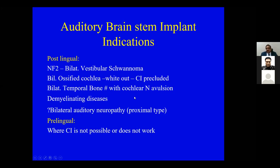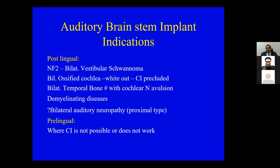What are the indications today for an auditory brainstem implant? The classical indication, even today, is NF2 — bilateral vestibular schwannoma — where we have operated on both sides. Today there is increasing effort toward removing a vestibular schwannoma while preserving not only the facial nerve but also the cochlear nerve wherever possible. However, this is extremely difficult because the tumor very often envelops the cochlear nerve, and at the CP angle level the nerve is extremely frayed and can easily be damaged.